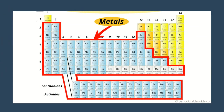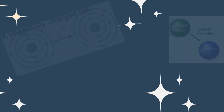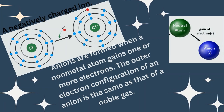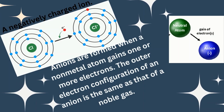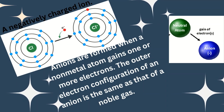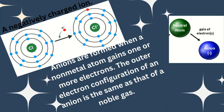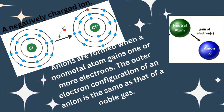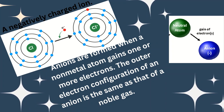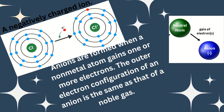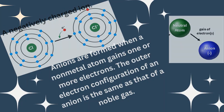Anions are negatively charged ions. Anions are formed when a non-metal atom gains one or more electrons. The outer electron configuration of an anion is the same as that of a noble gas. Non-metals occupy specific positions in the periodic table.